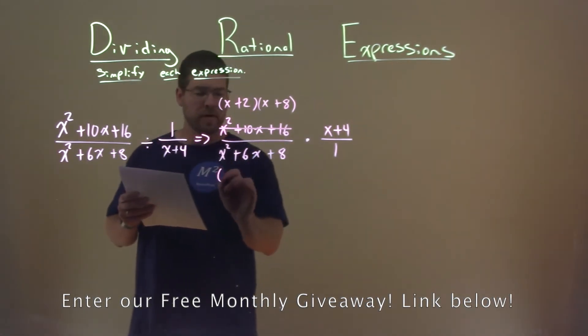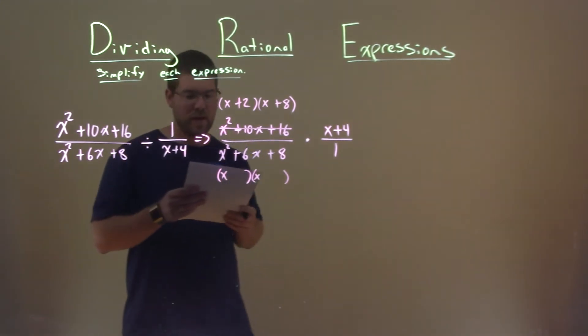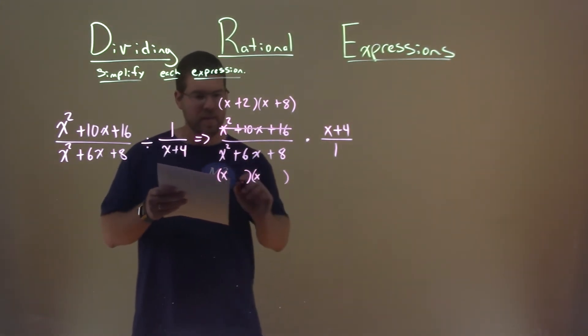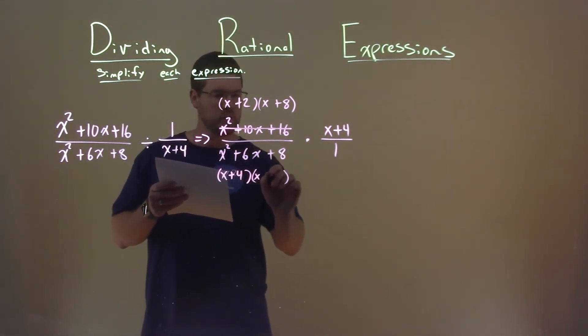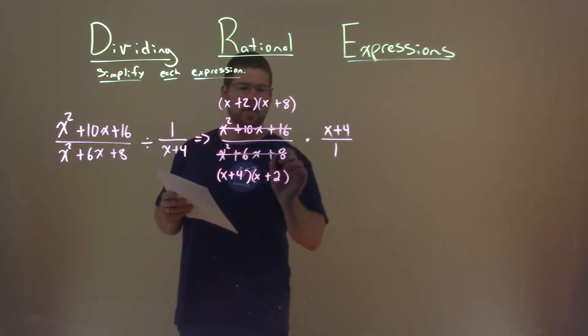Same thing with the denominator here. We can factor this, what times multiply by 8 but add to be 6, and that's going to be a 4 and a 2. Okay, and then cross that out.